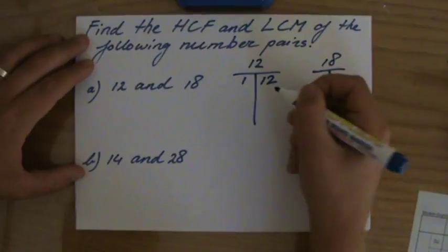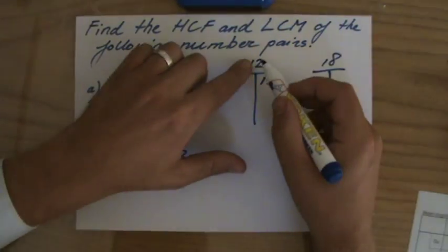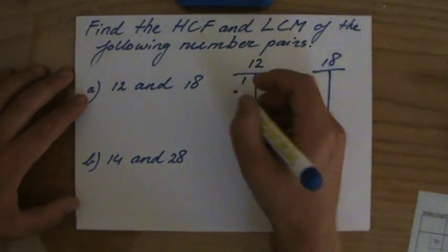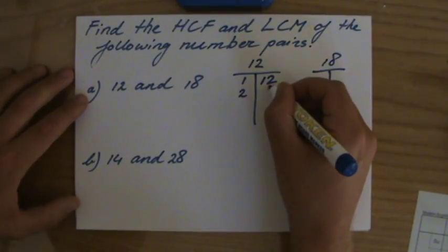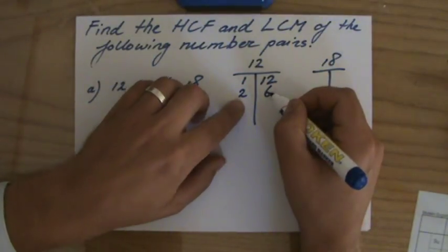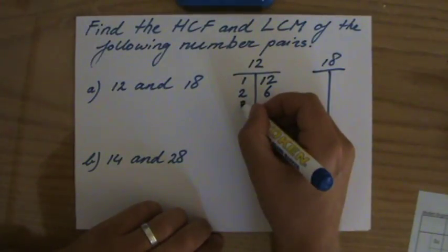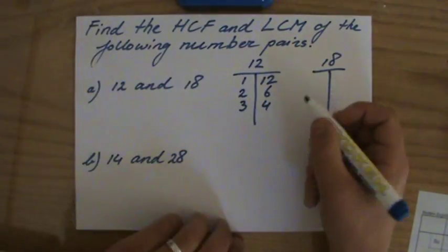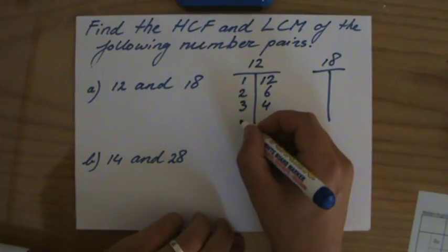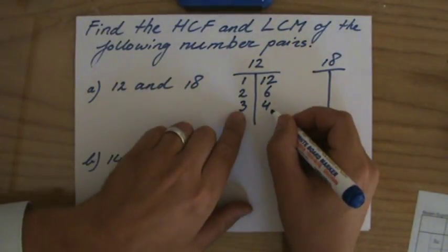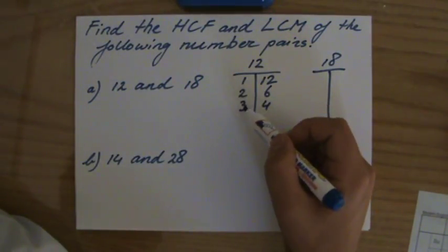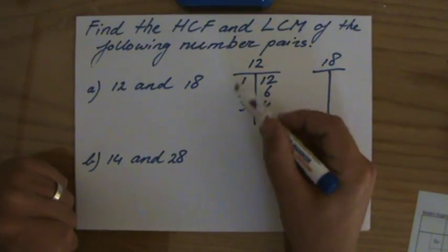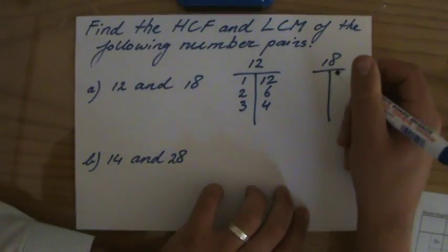1 times 12, so 1 and 12 are factors of 12. 2 times 6, so 2 and 6 are factors of 12. 3 times 4, so 3 and 4 are factors of 12. The next would be 4 times 3 but I already have those, so 12 has factors: 1, 2, 3, 4, 6, and 12 — six factors in total.